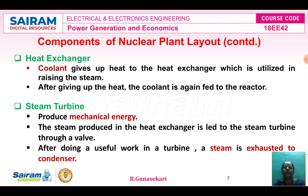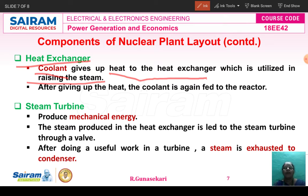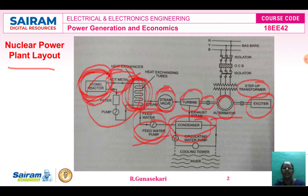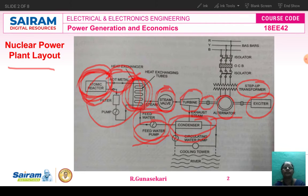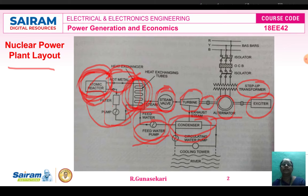Now we study about the heat exchanger. What is the function of the heat exchanger? It converts water into steam. The coolant gives up heat to the heat exchanger, which is utilized in raising the steam. After giving up the heat, the coolant is again fed to the nuclear reactor. The feed water is fed to the heat exchanger, converts into steam, and again comes back to the nuclear reactor through the pump and filter.